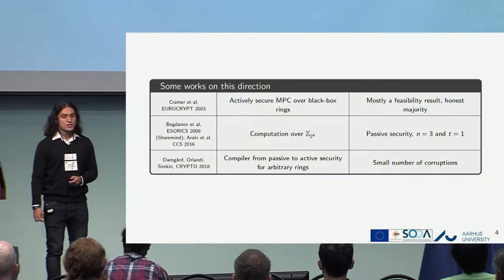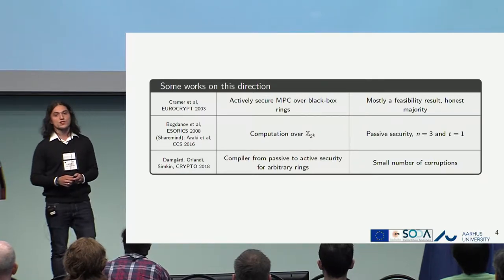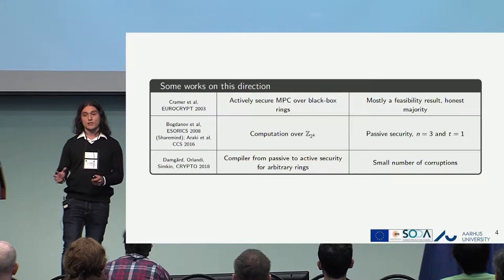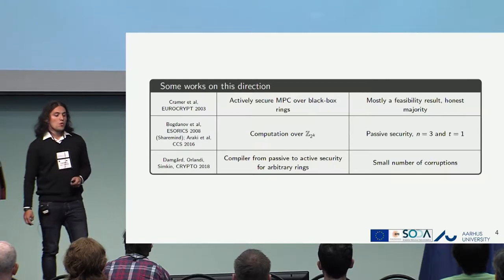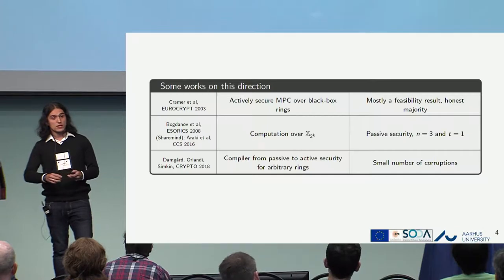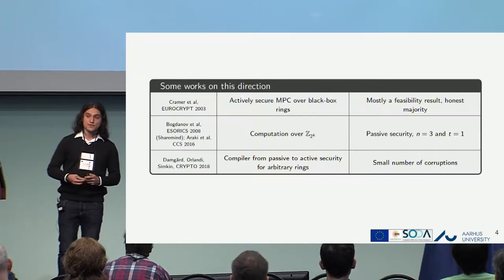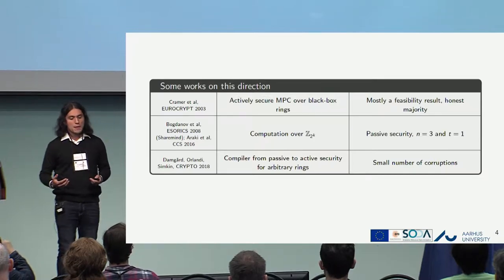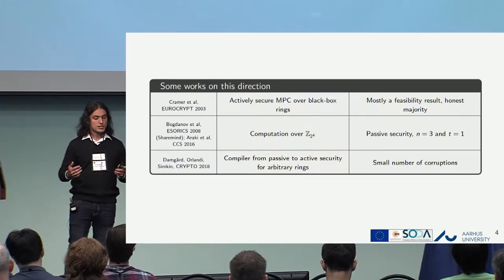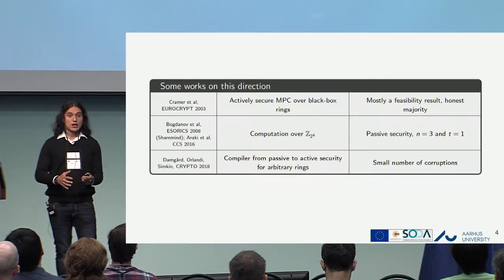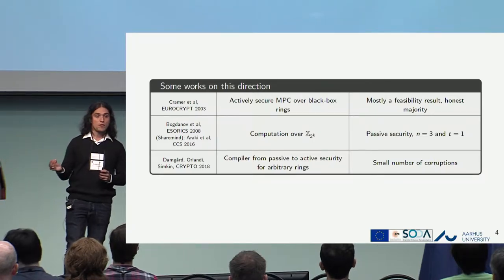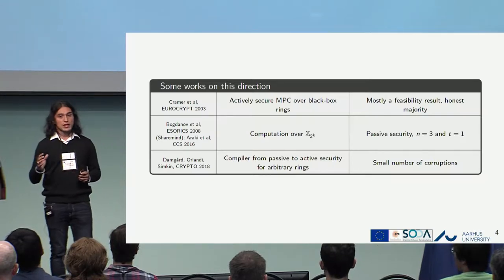There are some prior works in this direction. Cramer et al. in EuroCrypt 2003 showed a feasibility result that this is possible in the honest majority setting, developing a protocol using only black box operations of the ring — addition and multiplication. We also have Brickell-Overdorf in STOC 2008, and Applebaum et al. in CCS 2016, who used replicated secret sharing, which doesn't depend on a field structure, to get computation over this ring. However, it doesn't scale too well because it only accepts one corruption. Finally, there is work being presented after mine — a compiler that takes a passively secure protocol over any ring and compiles it to an active one — but the number of corruptions gets lowered by roughly a square root.